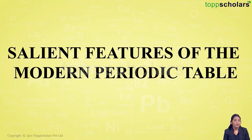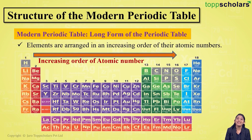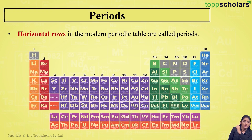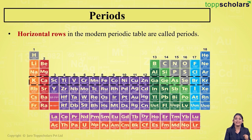Hello students, welcome to Top Scholars. Today we'll be discussing the salient features of the modern periodic table. The modern periodic table is also known as the long form of the periodic table, wherein elements are arranged in increasing order of their atomic numbers. Now, these horizontal rows in the modern periodic table are called as periods.